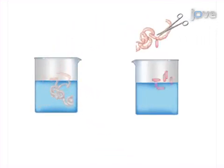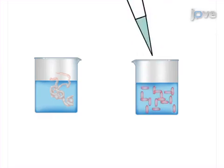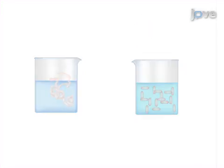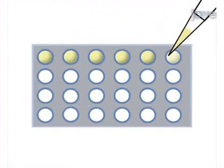The final step is to sequentially digest the LMMP in collagenase and trypsin followed by plating the cells on the pre-coated cell culture surfaces.